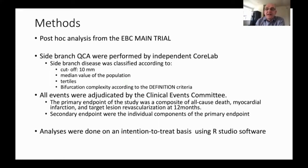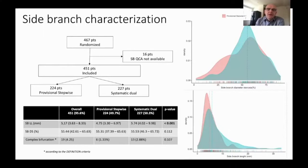The distribution of side branch disease shows that most disease was relatively focal — the vast majority less than 10 mm in length. The two strategies (provisional in pink, systematic in blue) were well matched. Side branch disease diameter distribution also showed relatively small amounts at higher stenosis levels, with the vast majority less than 75% stenosis. This is a very different population from that treated in the DEFINITION 2 trial.